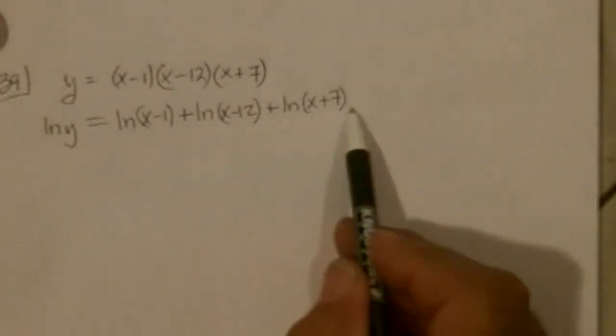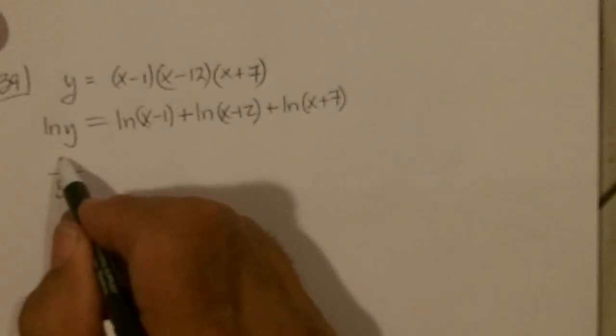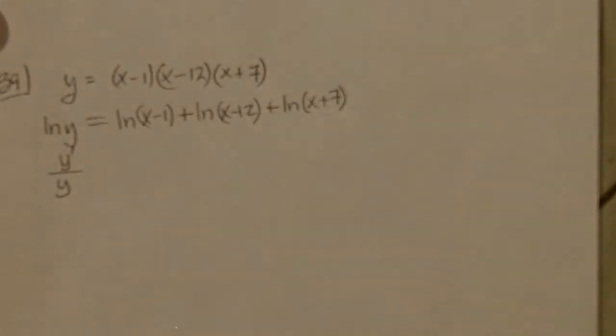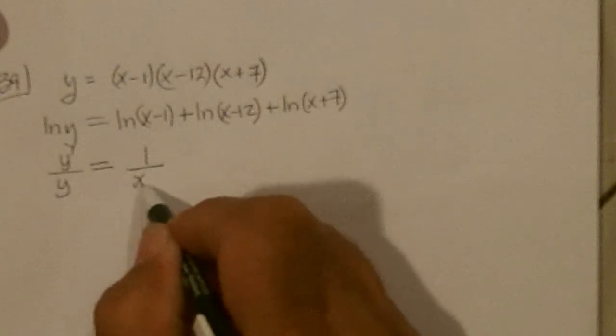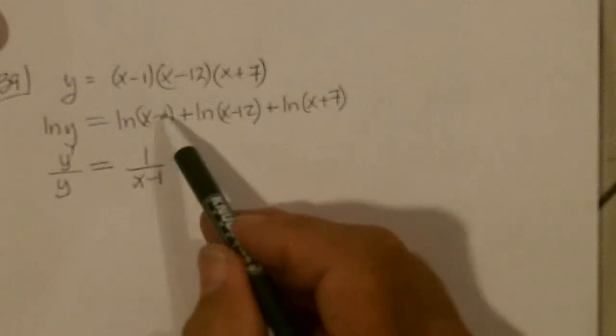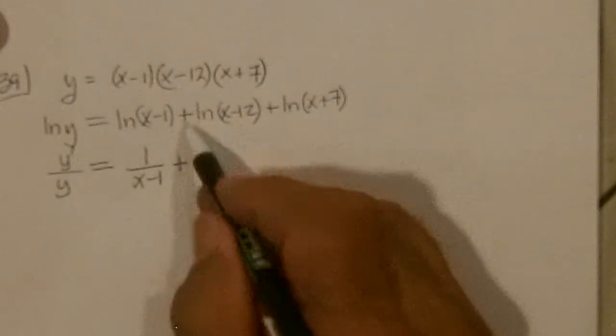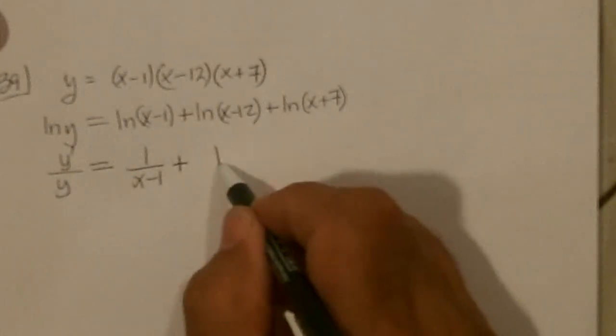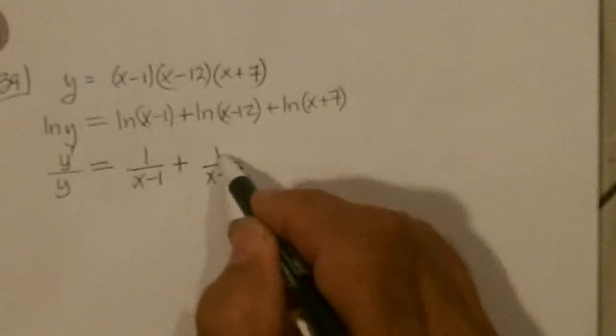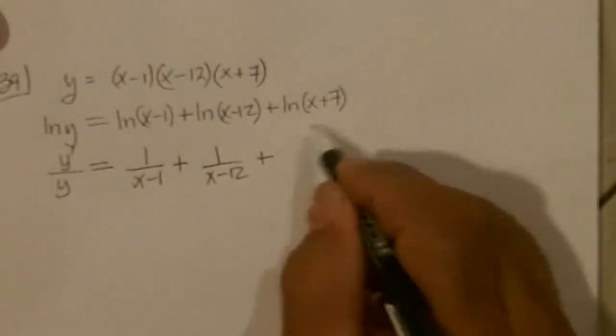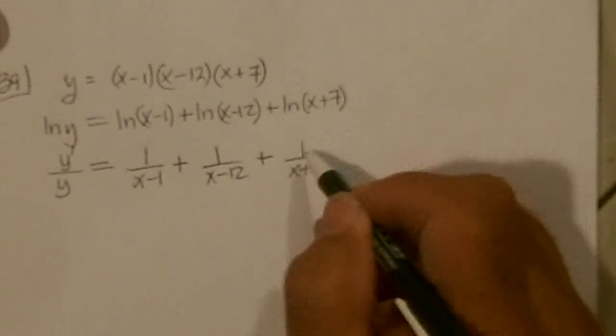So when we take the derivative of Y times the derivative of Y equals, the derivative of that is 1 over X minus 1 times the derivative of the inside, which is 1, plus the derivative of this is 1 over X minus 12 times the derivative of inside, which is 1, plus the derivative of this is 1 over X plus 7 times the derivative of the inside, which is 1.